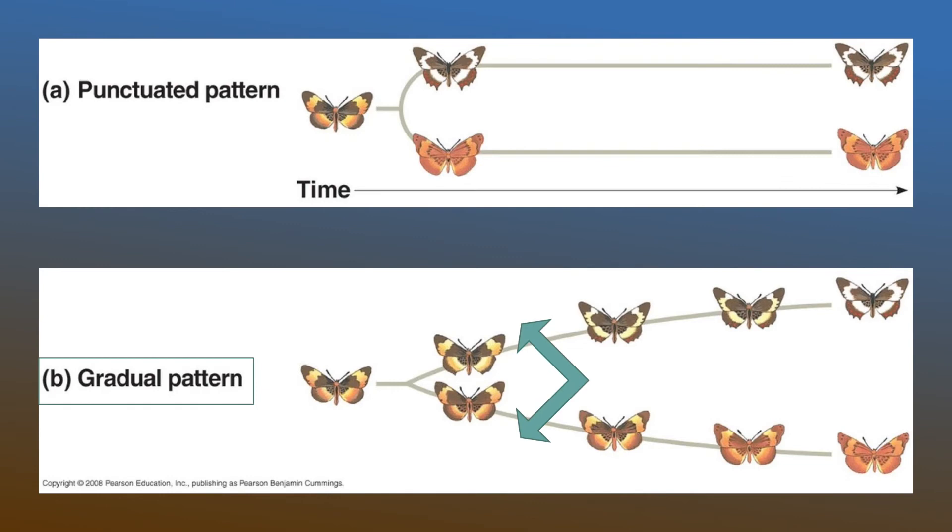And moving on to the gradual pattern or gradualism, we start with our parent species and then we see that the two new species that are formed are relatively the same. They look pretty similar, especially to the parent species, and there's no real change that occurs.